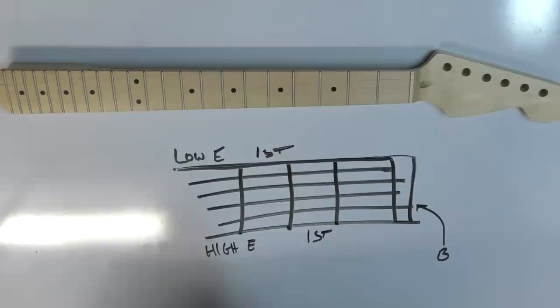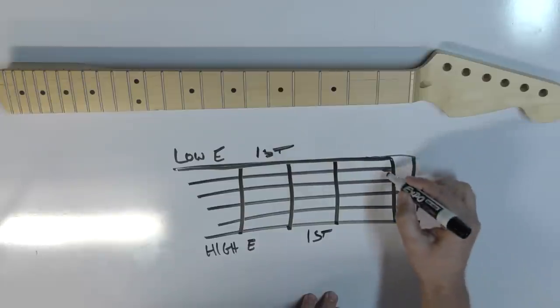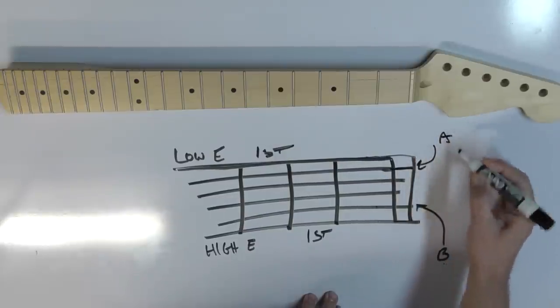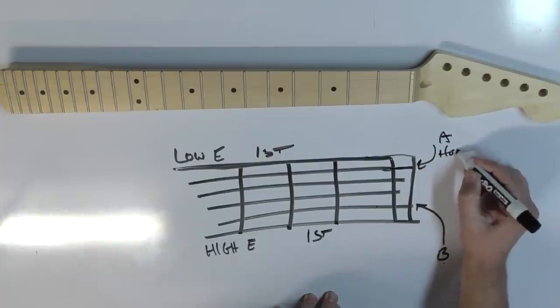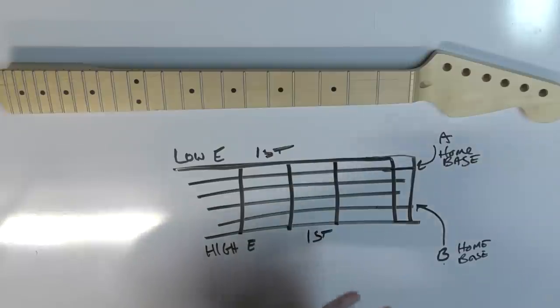There's going to be two strings that we're going to be looking at and separating from everything else. And it's going to be the second one in, which is the B. And it's going to be the second one in, right here, which is the A. And we are going to be calling these home base. I bet you're already getting confused, aren't you? But don't worry, I'm going to make this easy for you.